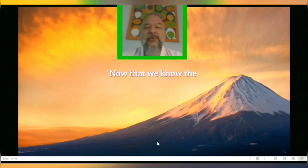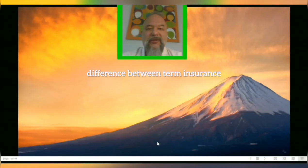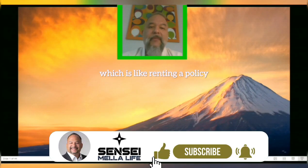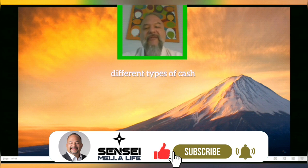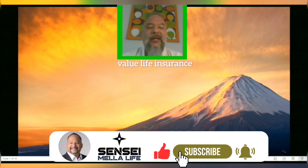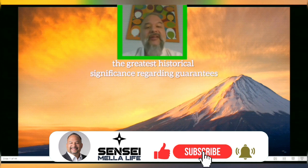Now that we know the difference between term insurance, which is like renting a policy, and cash value life insurance, which is owning a policy, let's get into the simplification of the different types of cash value life insurance. I'll be focusing on the type with the greatest historical significance regarding guarantees.